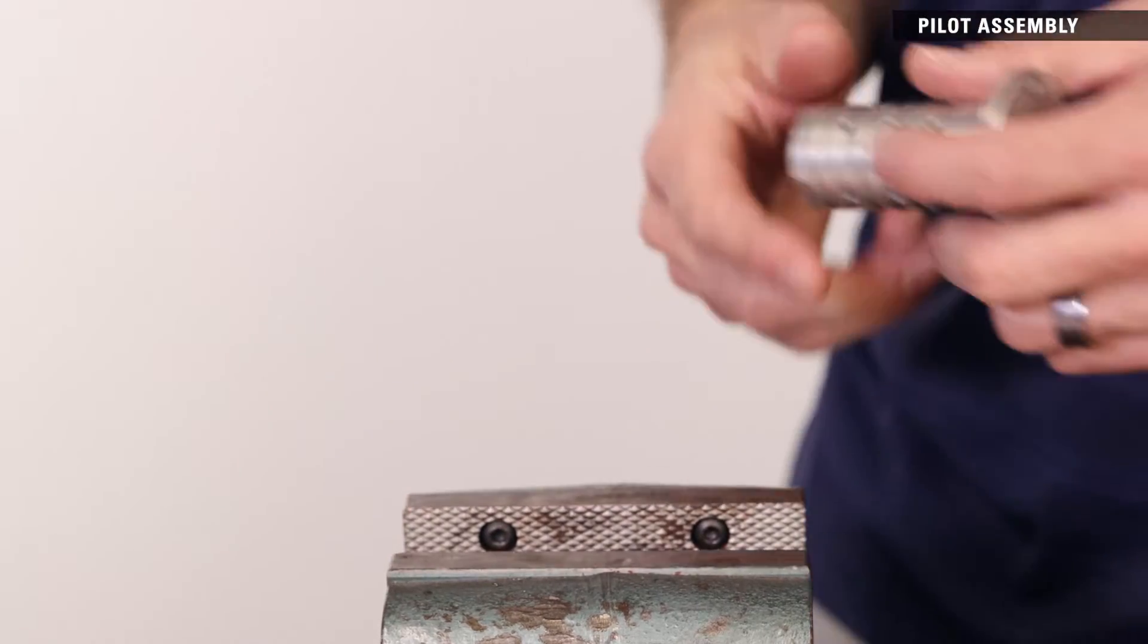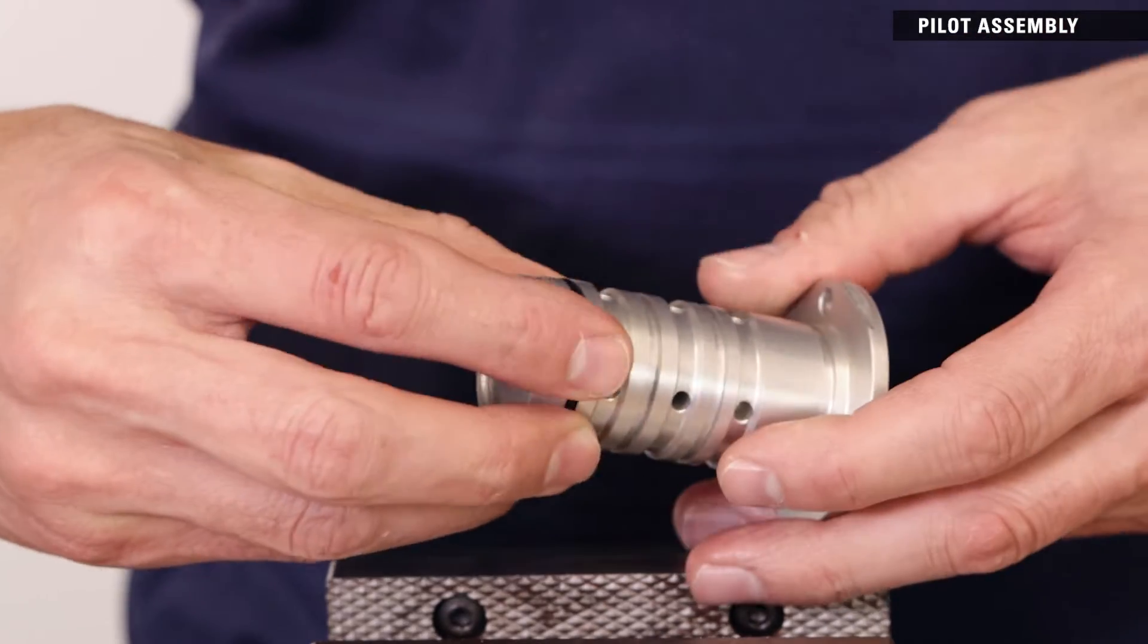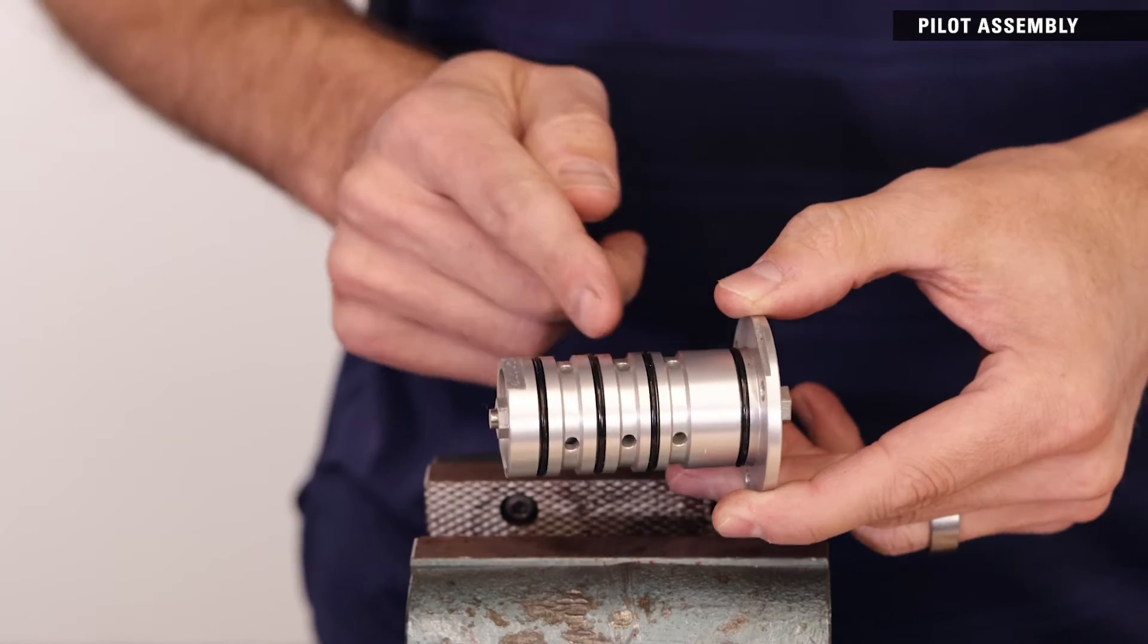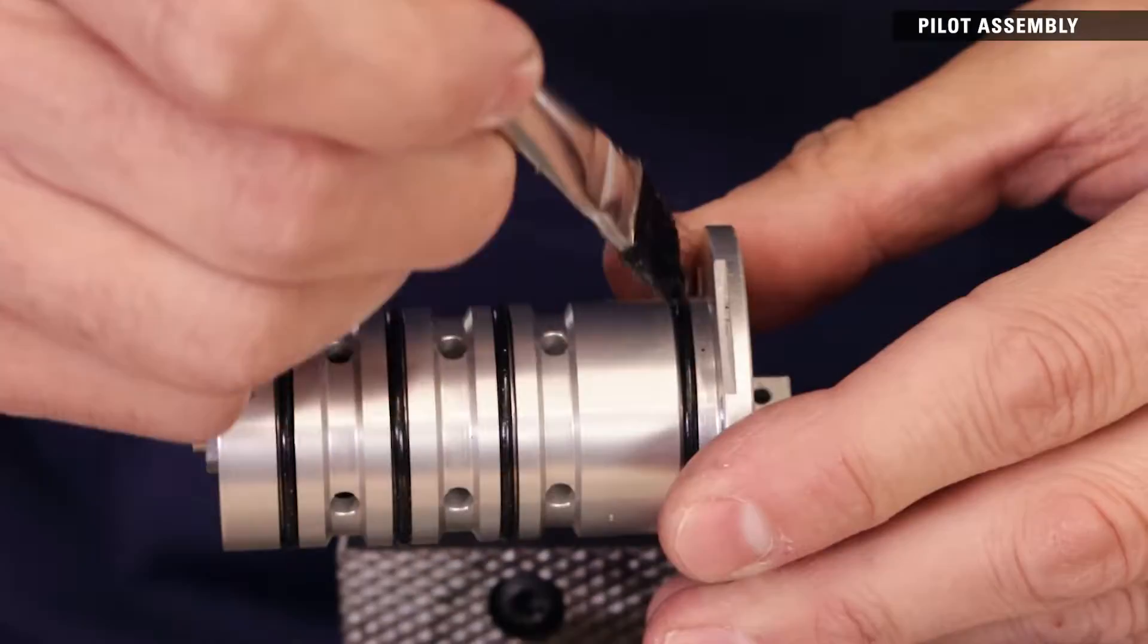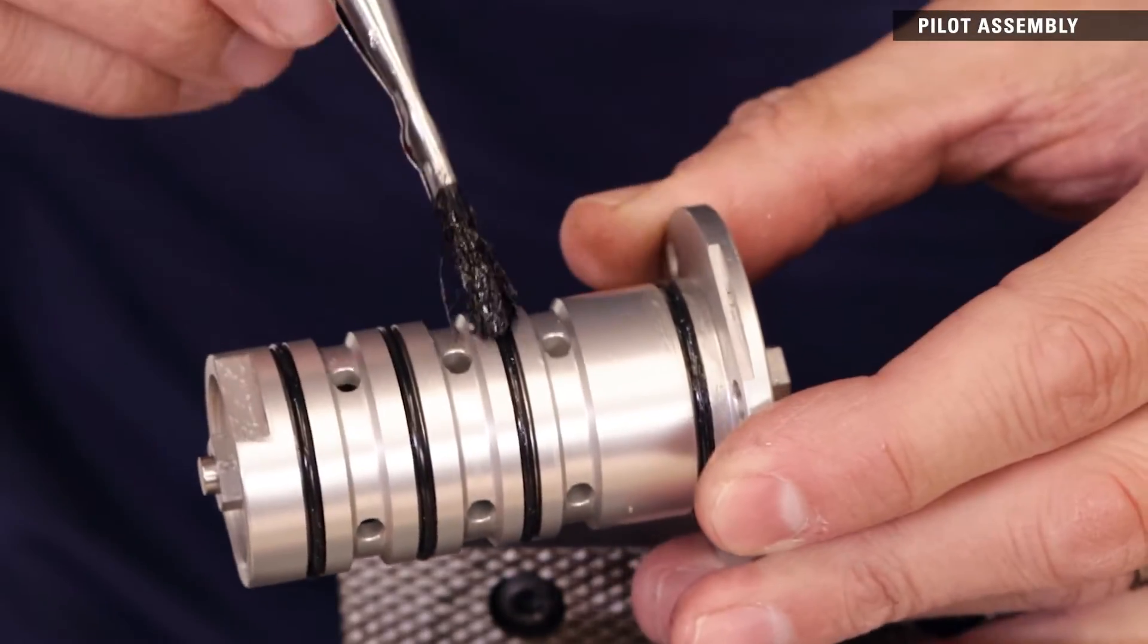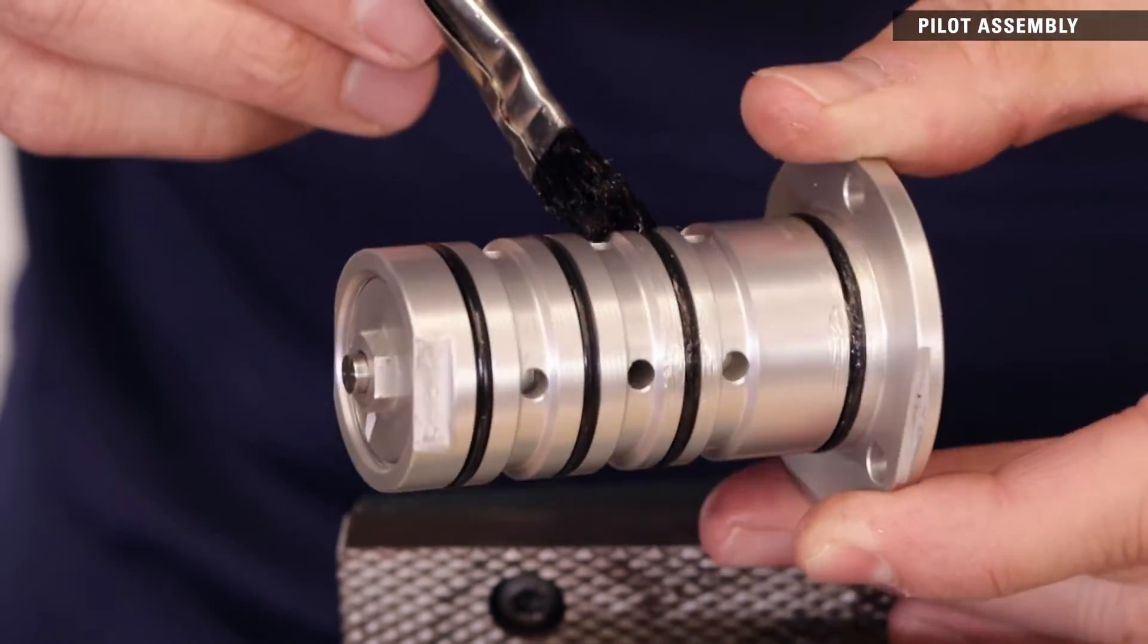Remove the cartridge from the vise and install the four O-rings into the narrow grooves on the outside of the cartridge. Then lightly grease the O-rings. Don't allow grease to get into the communication holes as this could cause the pilot to not operate properly.